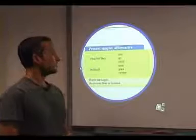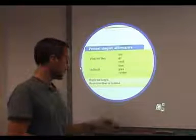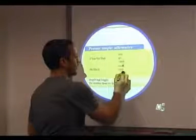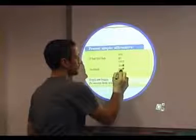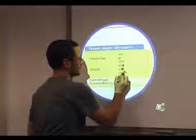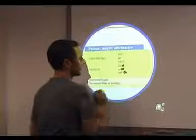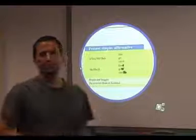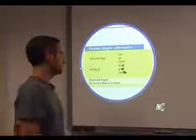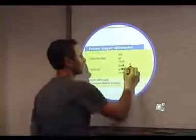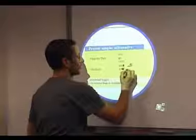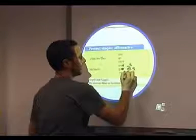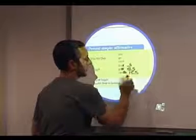Here we're learning the present simple affirmative. I'll take my pen and blank out the endings of the verbs, and ask a student to either come up and write in the endings themselves or call them out. So for 'lives,' we add an S. For 'go,' we add ES. And for 'carries,' we add IES.